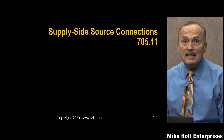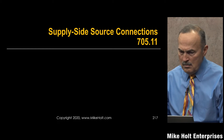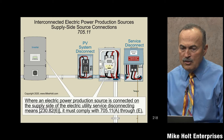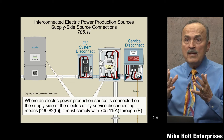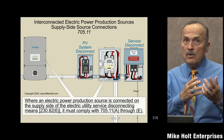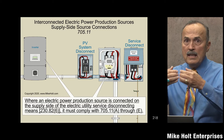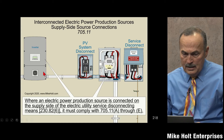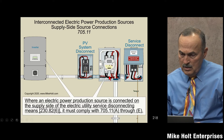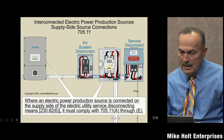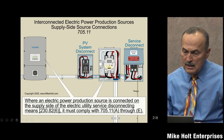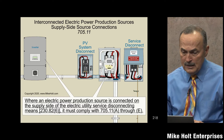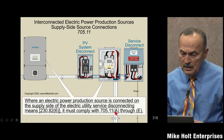Supply side source connections — NEC 705.11. Using a PV system as an example, the output conductors of the inverter connect to the utility, making the interconnection on the supply side. Here's your service disconnecting means — this connection is before that disconnect, not after. So when an electric power production source is connected on the supply side of the utility service disconnecting means, we have to comply with 705.12.11, items A through E.